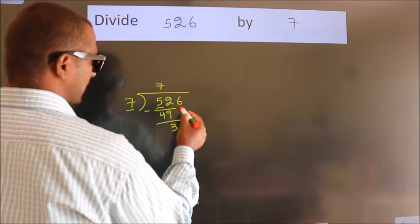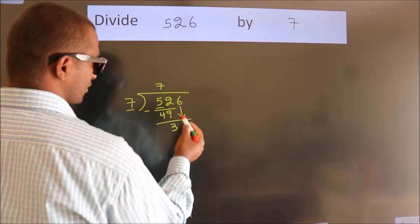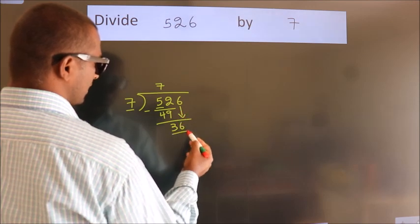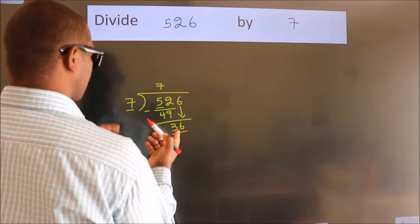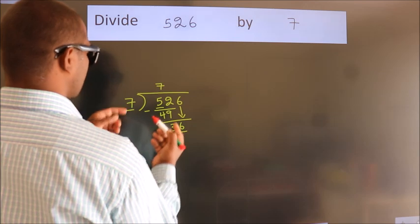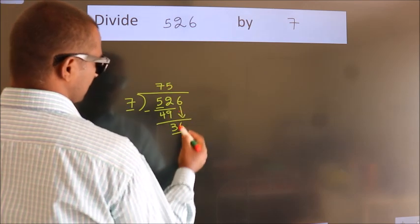After this, bring down the beside number. So, 6 down. So, 36. A number close to 36 in 7 table is 7 fives, 35.